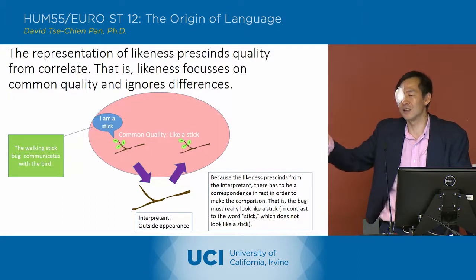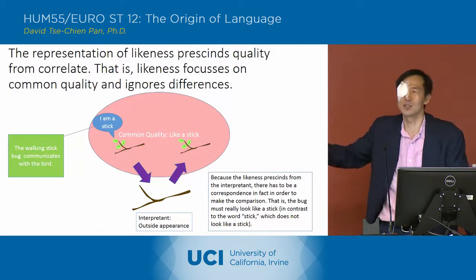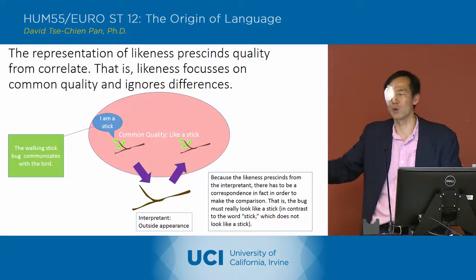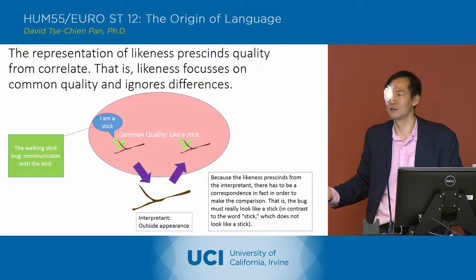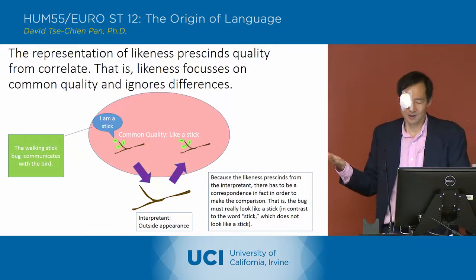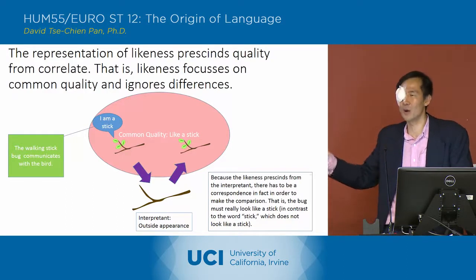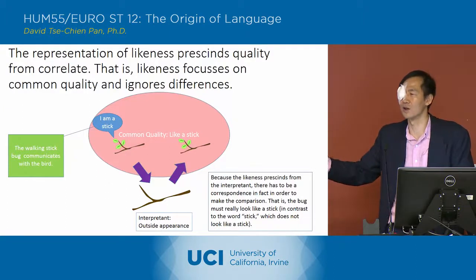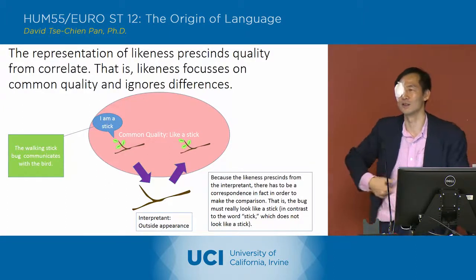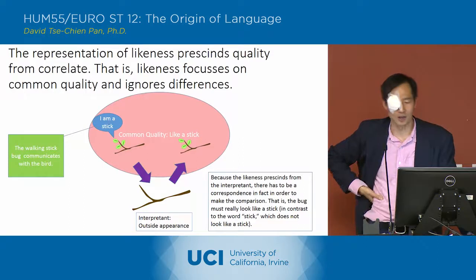To the extent that it doesn't look like a stick, this is not going to work. It has to be a real quality that they share in fact. So you can say there's a correspondence in quality, but it's really a shared quality — we're not distinguishing the stick from the bug.